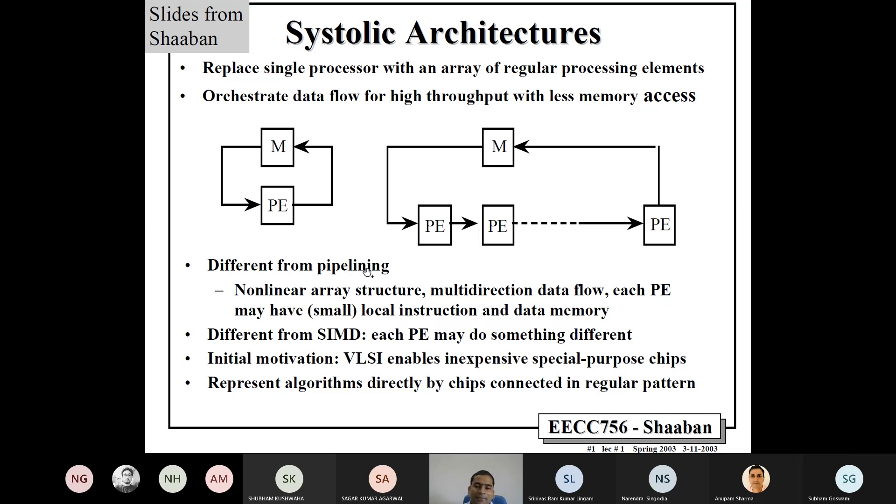So, it is not exactly pipelining. It is somewhat different than pipelining, but it has some similarities with pipelining. Here, we have non-linear array structure, multi-directional data flow, and each PE may have a small local instruction data. But we could have a non-linear array structure. And see here, it is just 1D, but next slide, I will show you 2D, 2D systolic array. There, it will have multi-directional data.